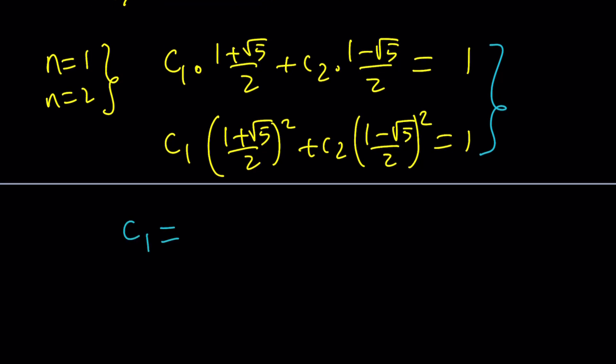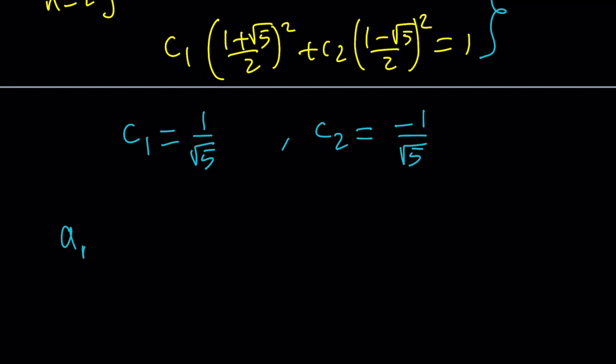From here, c1 turns out to be 1 over root 5, and c2 is going to be negative 1 over root 5. And a n from here is going to be the famous Fibonacci sequence. Now you can go ahead and write it as follows, and this will basically give you the general term of the Fibonacci sequence.